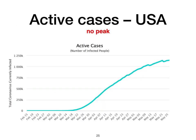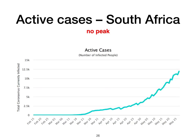Let's look now at the US. No peak here — the numbers are still going up. At over a million active cases, it's a huge load on the hospital system and a drain on the productive capacity of society. In South Africa, we see a similar picture — the numbers are much smaller, but we haven't hit a peak.